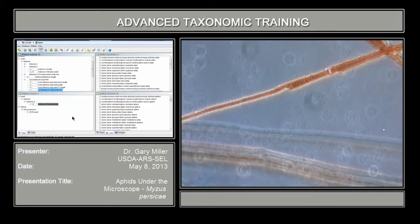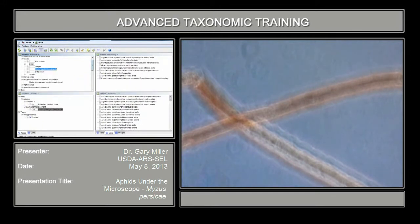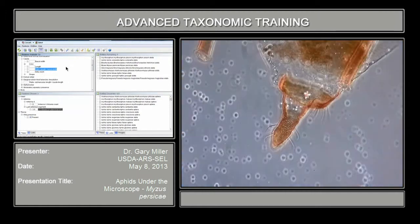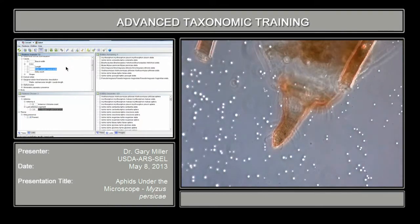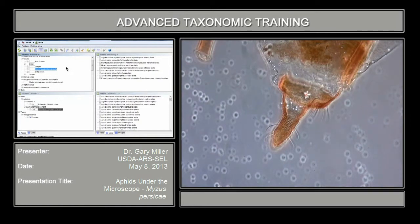So I'm going to measure this. I get 3.5. Now we're going to look at the ratio of the length to the basal width, and this is in the cauda. So we're going to be measuring. The base is going to be from here to here, and the length is going to be from here to the tip.